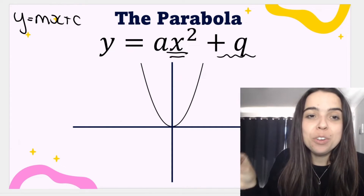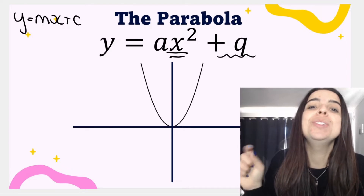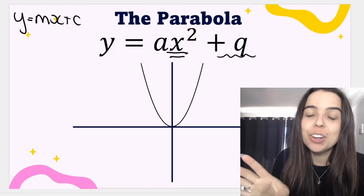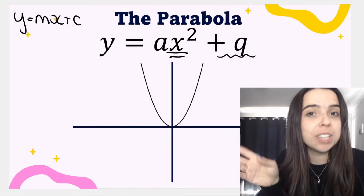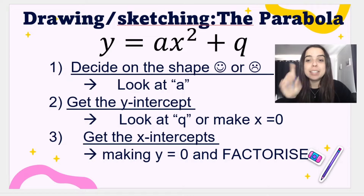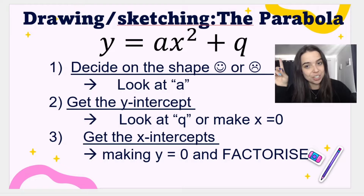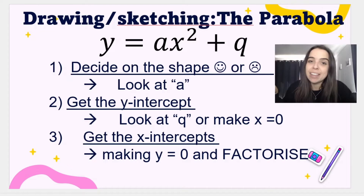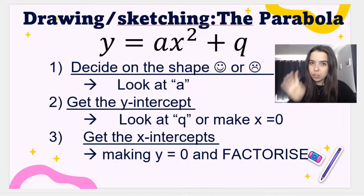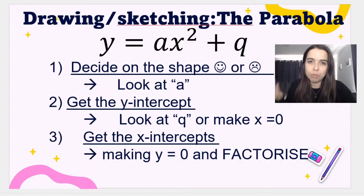Remember, you immediately know that you're dealing with a parabola when you see x squared. We know that our graph is going to be a U shape. Let's look at the steps we're going to follow when drawing or sketching a parabola. I've broken it down into three basic steps. Step number one is looking at the equation they give you — the y equals equation — and looking at the a value, which is the coefficient of x squared, the number and sign in front of x squared. You need to look at that a value and decide on the shape of the graph.